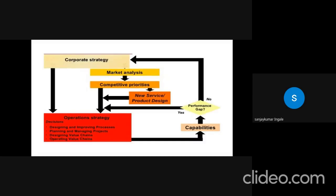Corporate strategy. Operation strategy. Deletion. Designing and improvement process or processes. Planning and managing projects. Designing wall chains. Operating wall chains. Is it capable? If no, then you have to start, go to corporate strategies. Plan the market analysis. See the competitive priorities. Then new service or product design. And yes, we can directly connect it to the market.